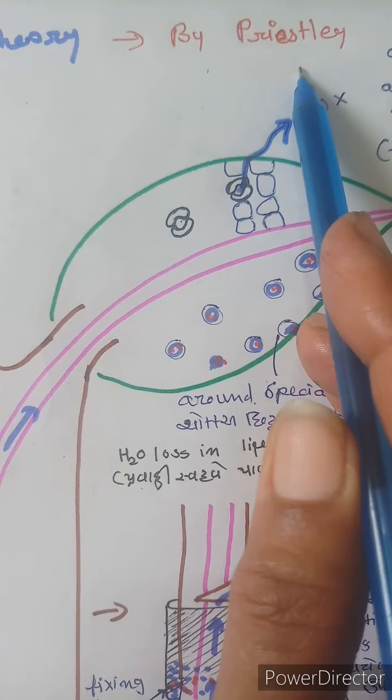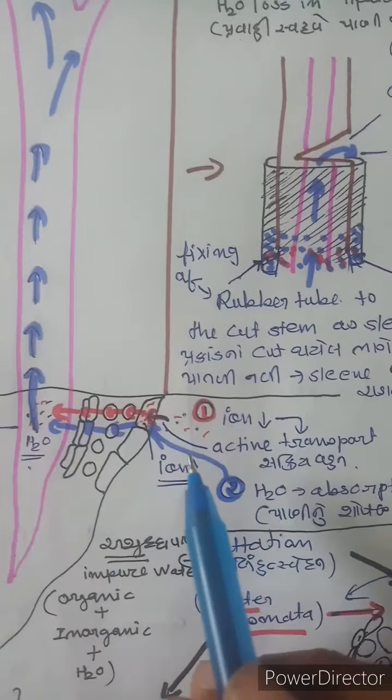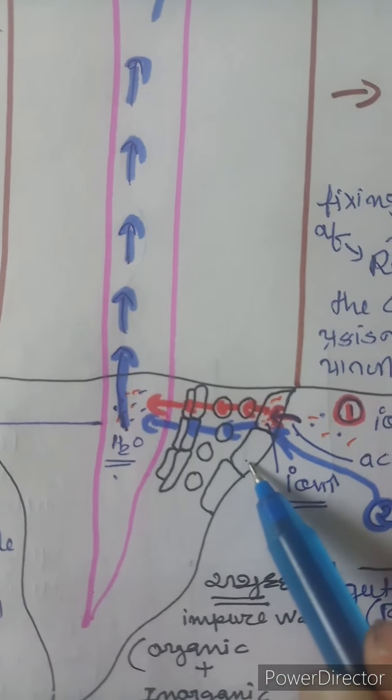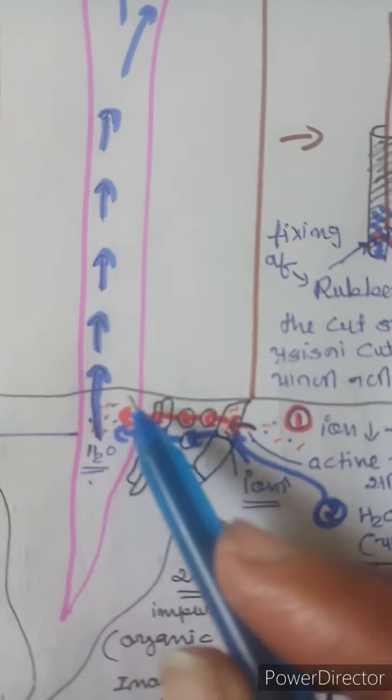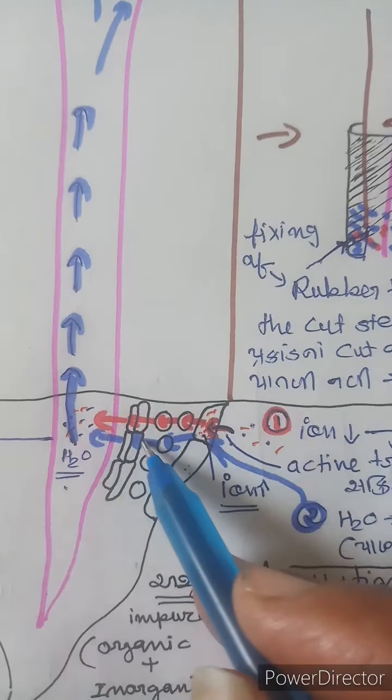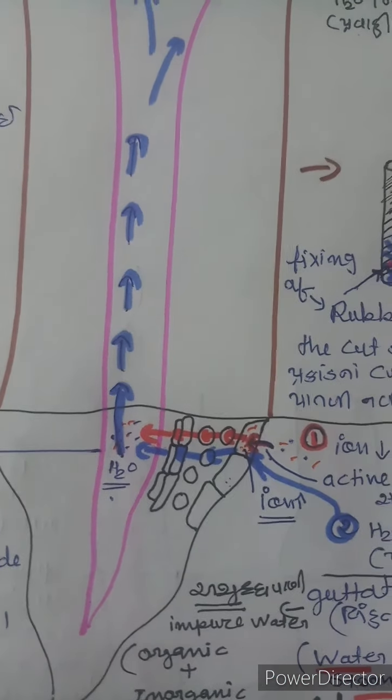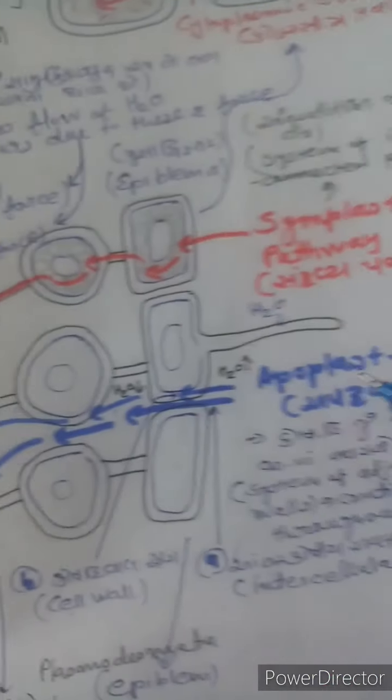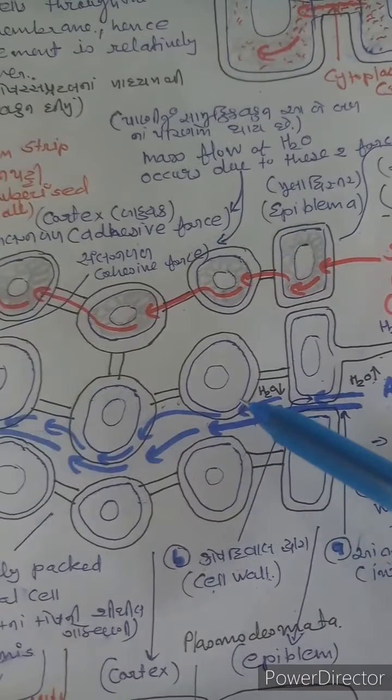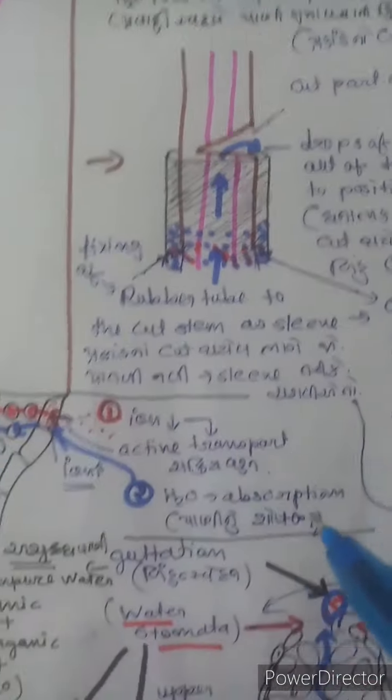The root pressure theory was given by scientist Priestley. If we look at a plant root, you can see the root system first. There is the root, then its root hair region, and then internally there is a circular arrangement. The structure includes epiblema, then cortex, endodermis, pericycle, and then xylem components. This is the cross-section of the root.